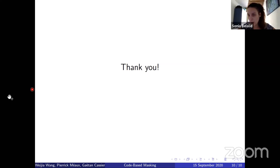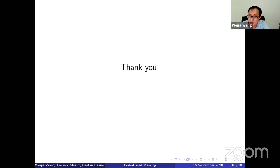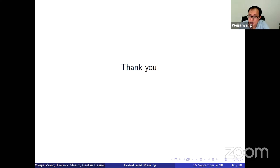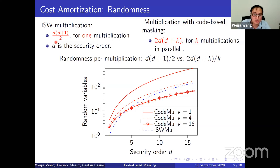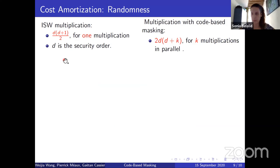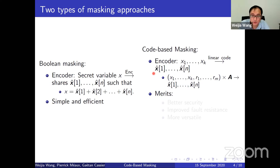I have a quick question, Guijia. You said that you can be more efficient if you have multiplications in parallel for code-based masking. But did you consider having multiplications in parallel for Boolean masking as well and compare both? For Boolean masking, it encodes shares for only one variable. So if you have several variables, you do Boolean masking several times. But for code-based masking, it actually encodes several circuits together into shares. So if you do the multiplication in the masked domain, you are doing multiplications for several circuits simultaneously.